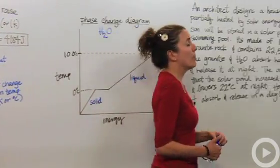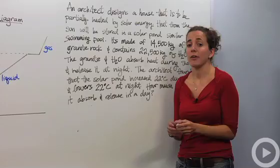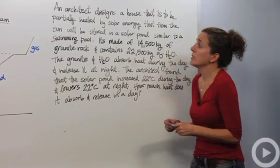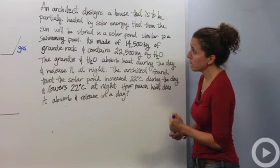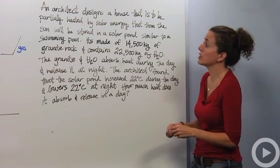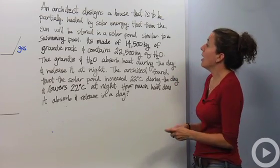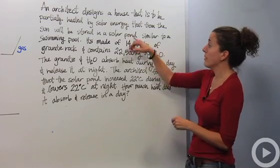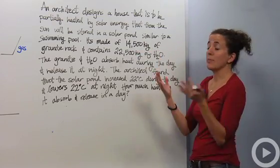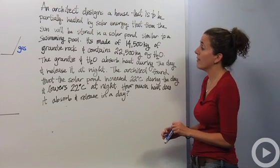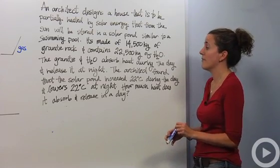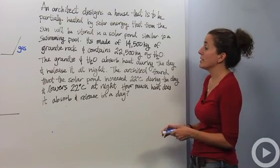Let's solve a problem together. An architect designs a house that is partially heated by solar energy. Heat from the sun will be stored in a solar pond, similar to a swimming pool. This pond is made up of 14,500 kilograms of granite rock and contains 22,500 kilograms of water.